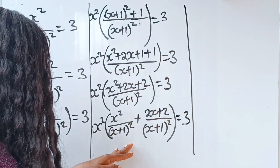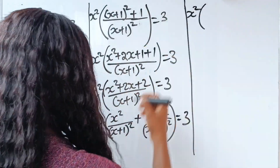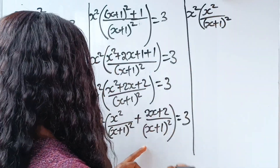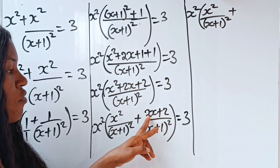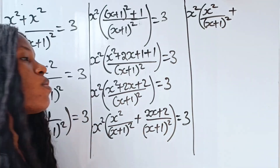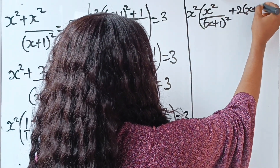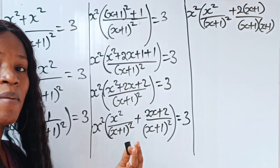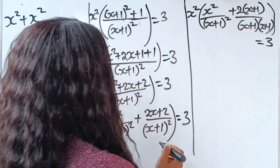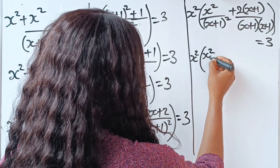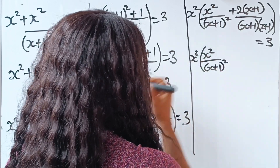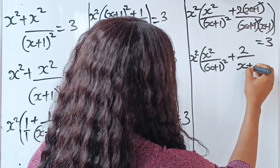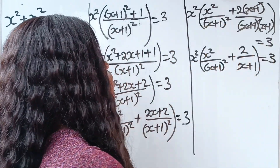So at this point let's continue. We have x squared multiplied by x squared divided by (x+1) squared. Now it's time to factorize — if we factorize 2 out we're going to have 2 multiplied by (x+1). So we have 2 brackets (x+1) divided by (x+1)(x+1), since (x+1) squared means (x+1) multiplied by (x+1). Everything is equal to 3. So we have x squared bracket x squared divided by (x+1) squared, plus 2 divided by (x+1), equal to 3.